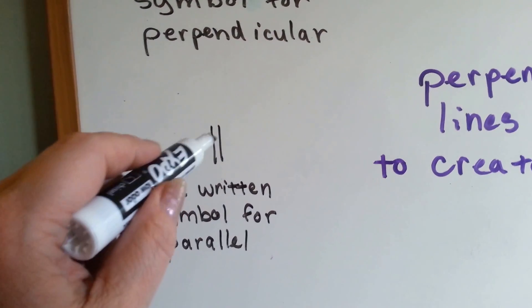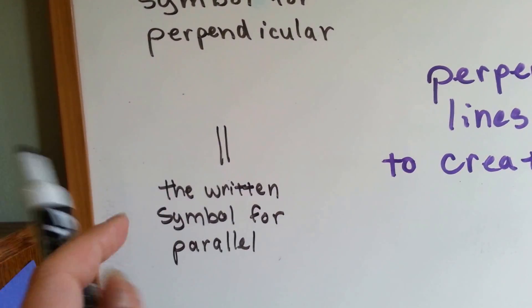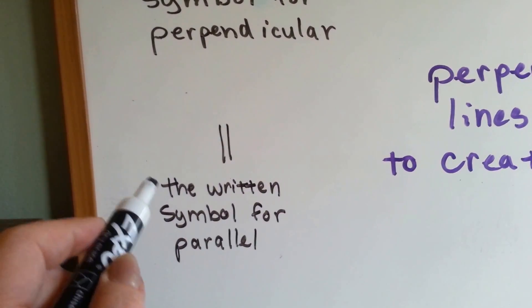When you see two lines together like this, like a sideways equal sign, that is the symbol for parallel.